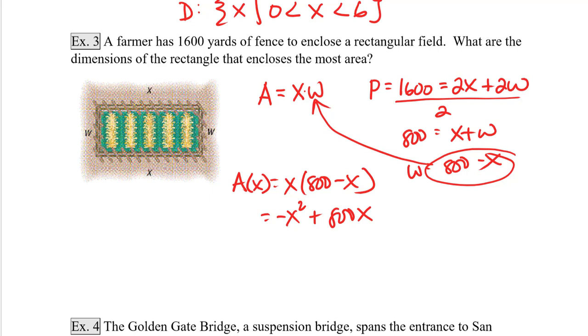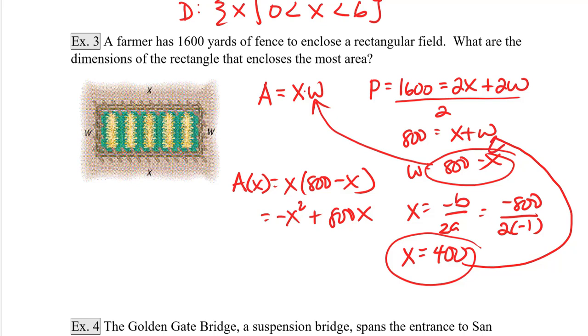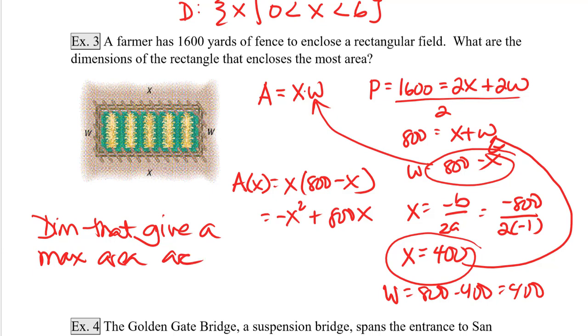So they didn't just ask us to write this as a function of x. They want us to figure out what would give us the maximum area. Well, we know we're looking at a quadratic function, and quadratic functions will have their maximum or minimum, but in this case a maximum, because it's opening down at the vertex. So if we locate the vertex by saying x equals negative b over 2a, we get negative 800 over 2 times negative 1, which gives us x is equal to 400. When x is equal to 400, and we plug that in to our equation for w, we get w is equal to 800 minus 400, which is also equal to 400. So the dimensions that give a maximum area are 400 yards by 400 yards.